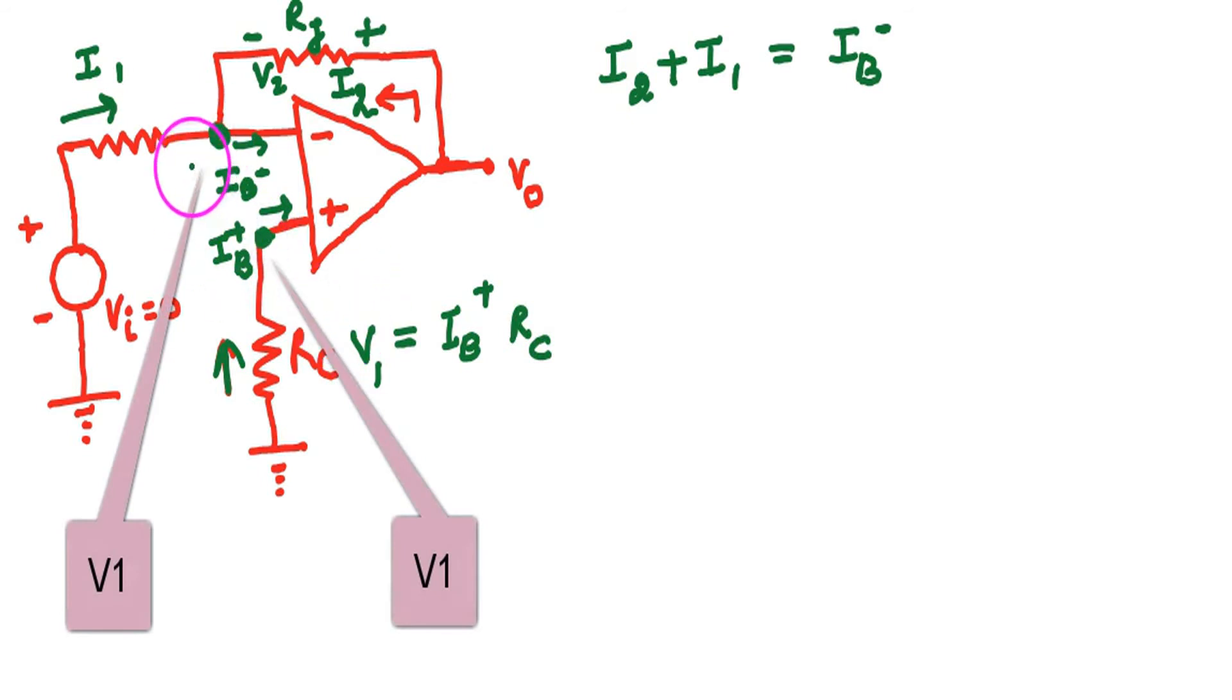V1 is now organized. Voltage at these two points will be the same by the ideal characteristics of the op-amplifier. Here the voltage is equal to VI, which is equal to zero.